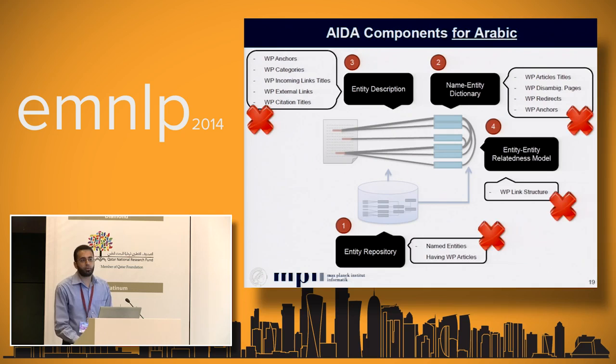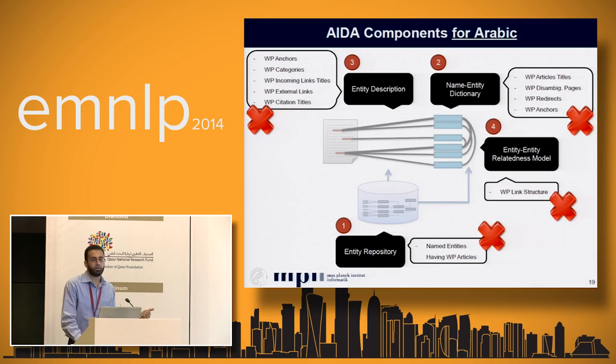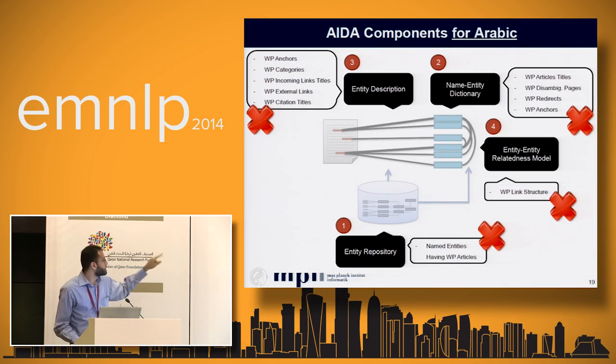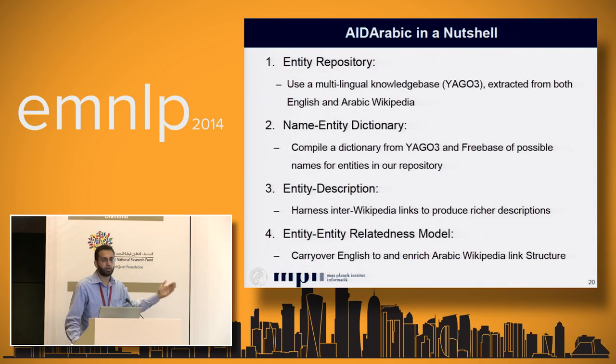When we try to apply this to Arabic, we find that all four components are not rich enough for proper disambiguation. If we build our entity repository from Arabic Wikipedia, it's way smaller, so the repository will be very small. The same impact affects the name-entity dictionary, entity descriptions, and in-link overlap. A small Arabic Wikipedia harms all four pieces.